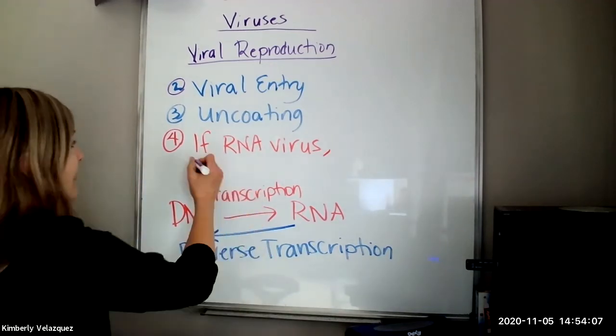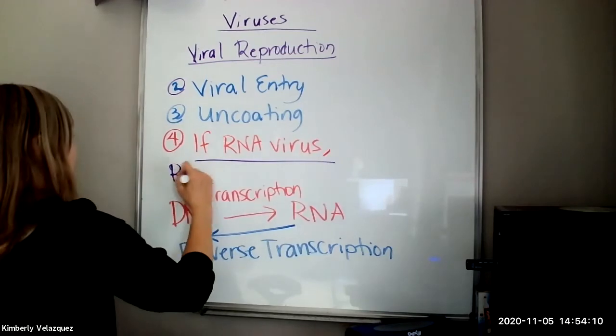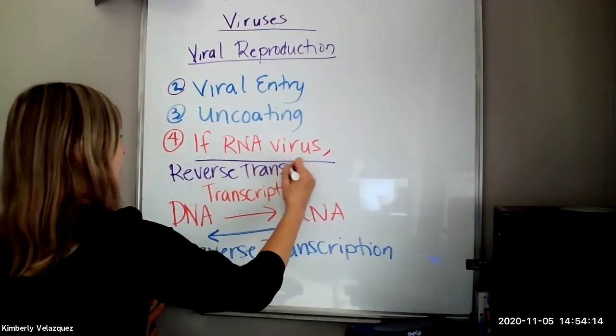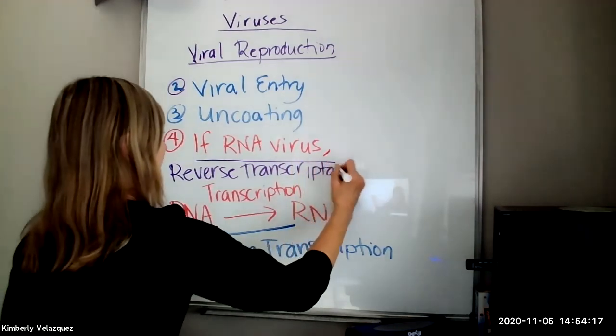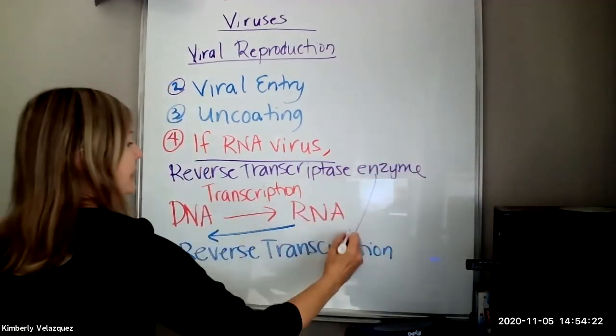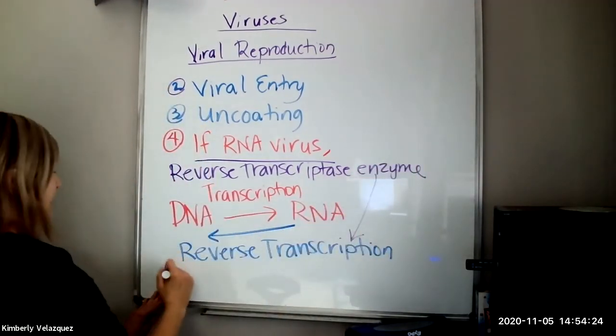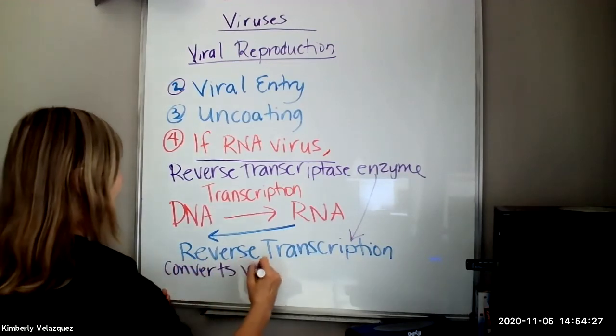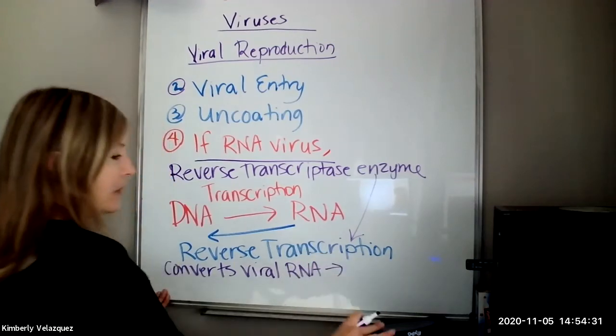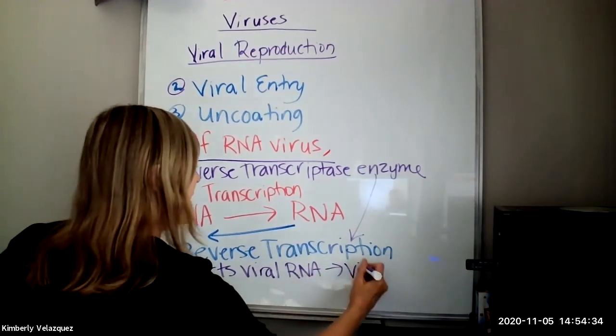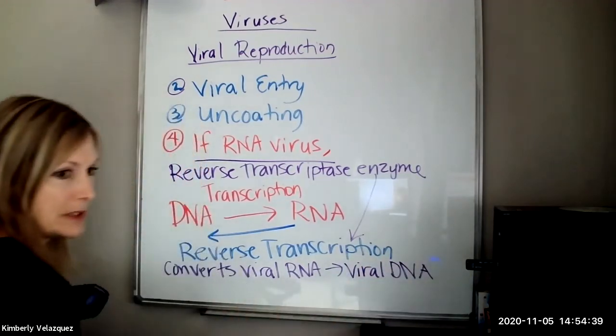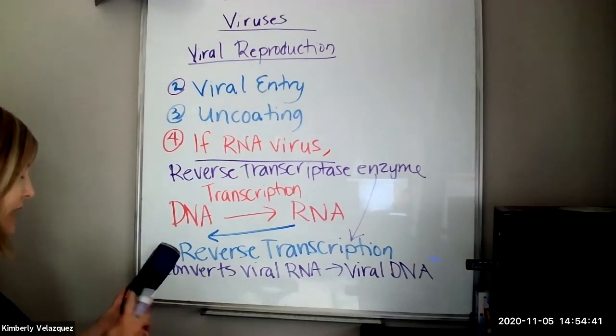So if it's an RNA virus, reverse transcriptase enzyme is going to carry out reverse transcription. It's going to convert viral RNA to viral DNA. And now viral DNA is in the cell and now it can start using the host cell as a reproductive factory.